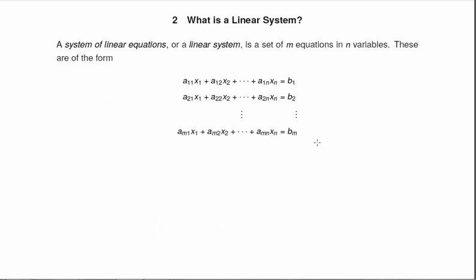So what is a linear system? Well, a system of linear equations, also known as a linear system, is a set of m equations in n variables. So basically, a system of linear equations, or a linear system, is just a group of linear equations. Instead of one, you have several that you're trying to look at all at once together.